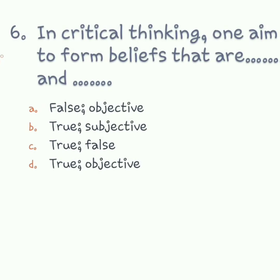Question number six: in critical thinking, one aim is to form beliefs that are dot dot dot and dot dot dot. Options include: false/objective, true/subjective, true/false, true/objective. In critical thinking you want to form beliefs that are true first, and secondly they should be objective. Objective refers to standards, whereas subjective is about gut feelings, and critical thinking has nothing to do with gut feelings. So the answer is true and objective.